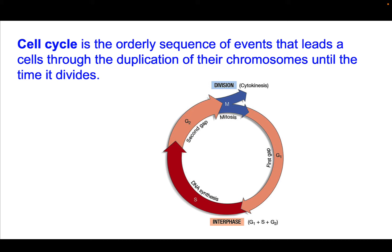There are four steps to the cell cycle: there's mitosis, when the chromosomes are physically separated, as well as a gap phase called G1, a DNA synthesis phase called S phase for synthesis, and a G2 phase, which is another gap phase.